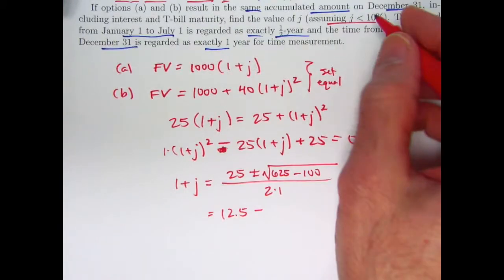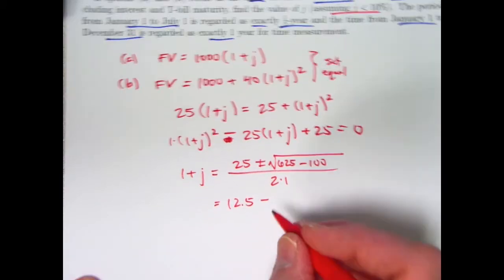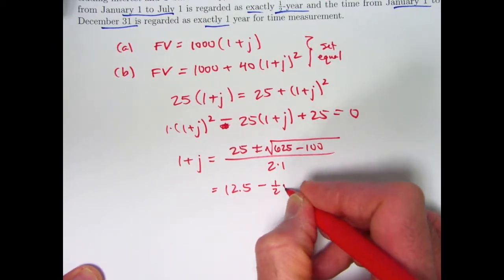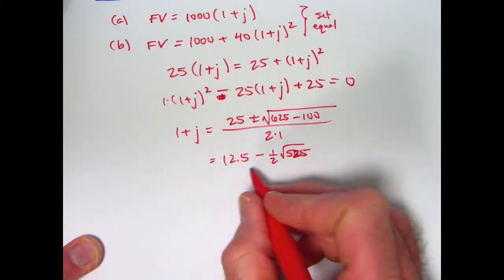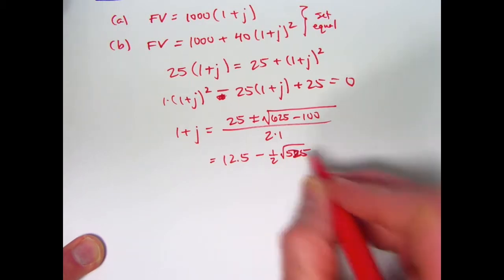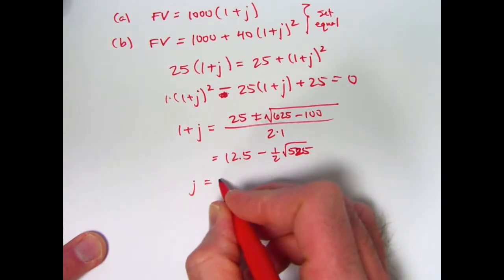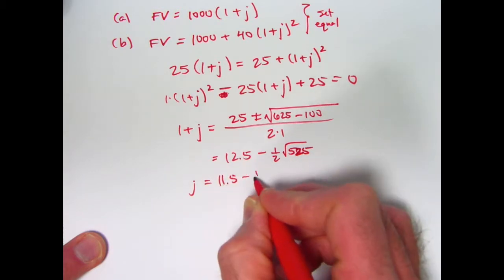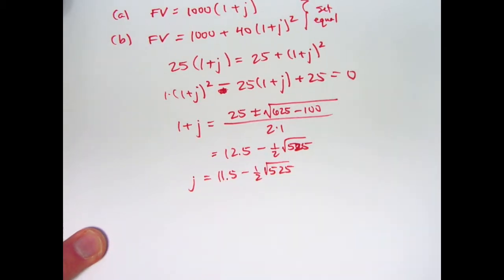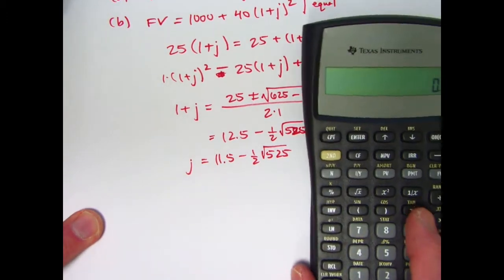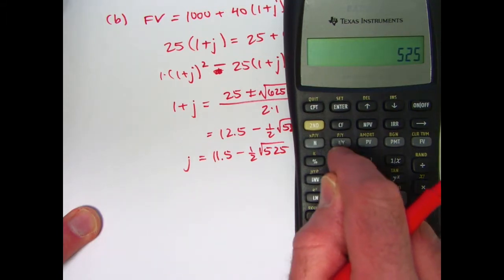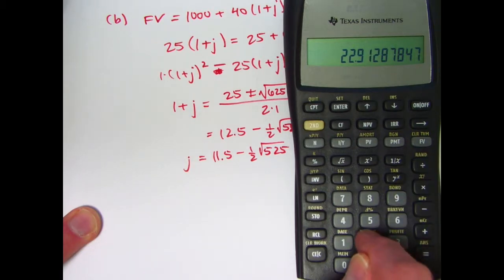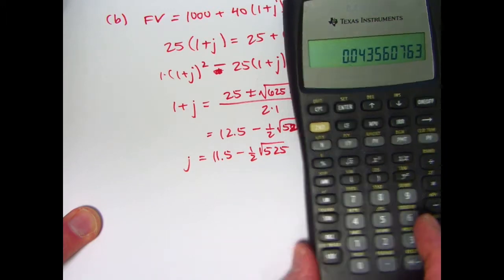This is going to give you 12.5 plus or minus. If we're going to pick J being less than 10%, it's going to be the minus one. I'll just jump ahead to the minus one here. Looks like 1 plus J is going to be 12.5 minus 1 half times the square root of 525, and then J will be subtract 1 from both sides: 11.5 minus 1 half times the square root of 525. Let's see what that produces. I'll go ahead and do the square root of 525 first, divide it by 2, negate it, add 11.5, and there we have it.